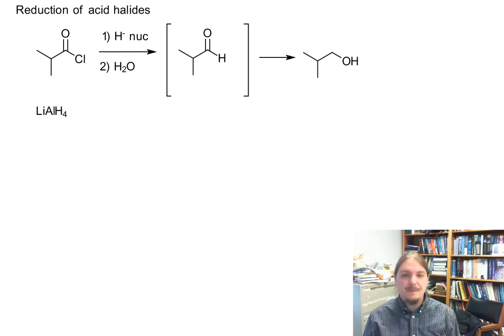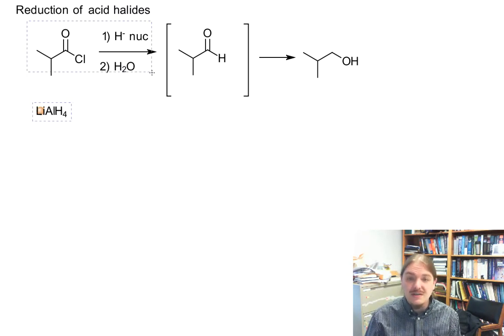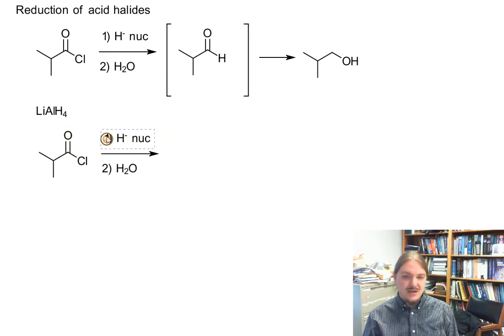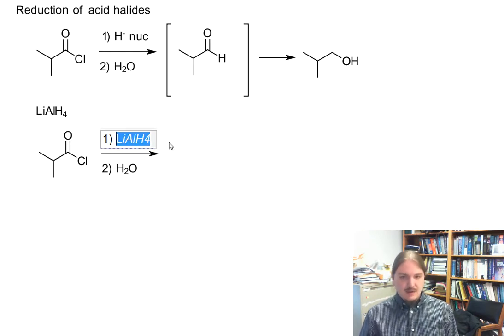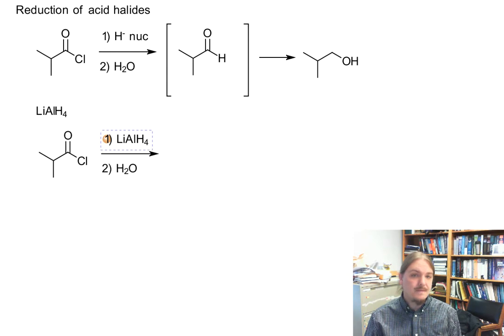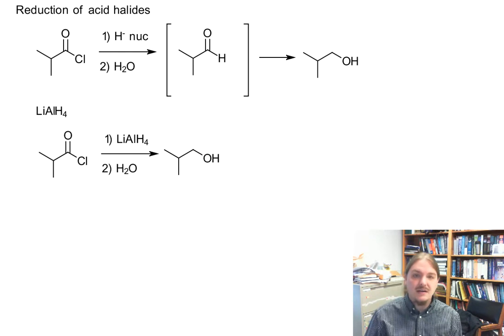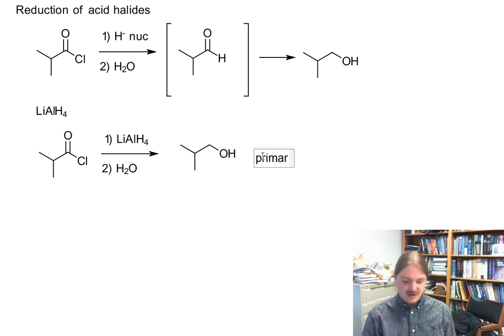We'll use lithium aluminum hydride first. Lithium aluminum hydride is the king of all reducing agents — it does everything that you want a reducing agent to do and more. It reacts with just about every functional group that can be reduced. We know that lithium aluminum hydride reacts with aldehydes, so I'm going to draw in the primary alcohol as the product. Lithium aluminum hydride reduces acid chlorides to primary alcohols.